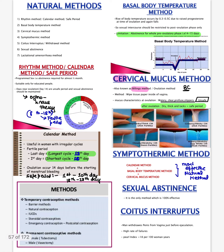Coming to the methods of contraception, the natural methods include: rhythm/calendar method, basal body temperature method, cervical mucus method, symptothermic method, coitus interruptus, sexual abstinence, and lactational amenorrhea. The rhythm/calendar method calculates the safe period — abstinence during the fertile period from day 8 to 18. Ovulation occurs around day 14. Formula: longest cycle minus 11 days and shortest cycle minus 18 days gives the fertile period.